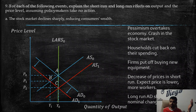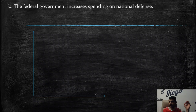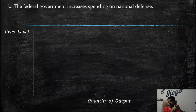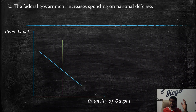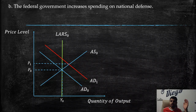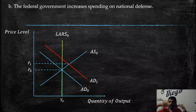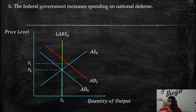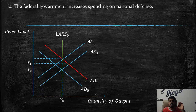Part b: The federal government increases spending on national defense. Remember aggregate demand is composed of consumption, investment, government spending, and net exports. Government spending increases, so aggregate demand shifts to the right, causing higher prices and higher quantities. However, workers can then bargain for higher salaries, making it more costly for producers. Aggregate supply then shifts to the left, returning to the original level of output but at a higher price level P2 compared with P0.